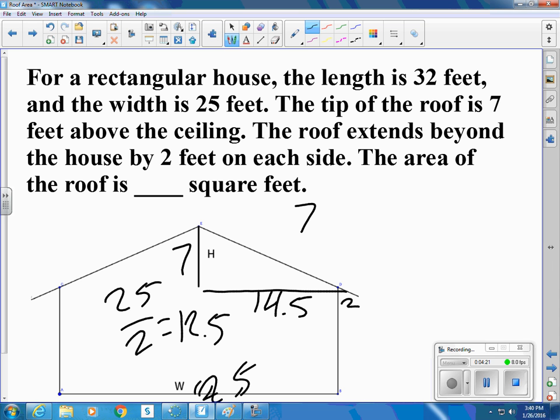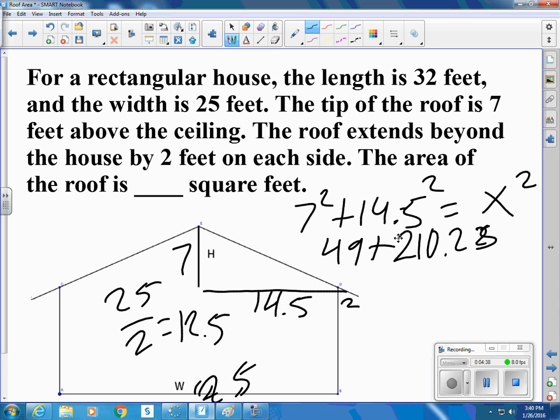So 7 squared plus 14.5 squared equals x squared. So 49 plus 210.25. So that would be 259.25. 259, sorry, not 459. 259.25. That equals x squared. So x is the square root of that. So 16.1 feet.